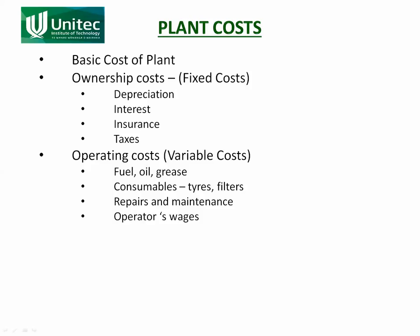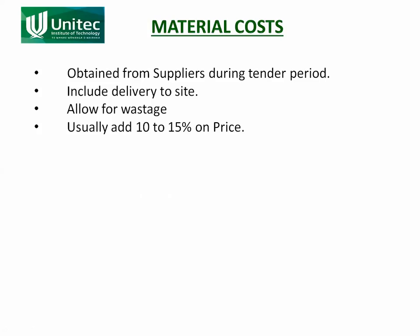Plant costs come in two types. Ownership costs are fixed costs that keep costing you whether the plant is working or not — depreciation, interest on purchasing the machine, insurances, and tax to keep it legal. In addition to that there are operating costs, also known as variable costs — these are only incurred when the machine is operating: fuel, grease, tires, filters, repairs, maintenance, and the operator's wages.